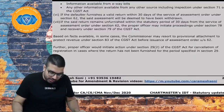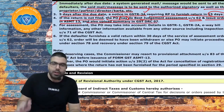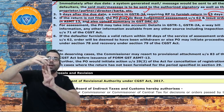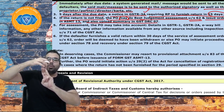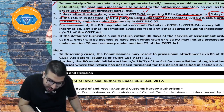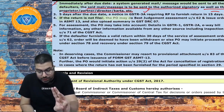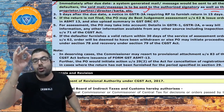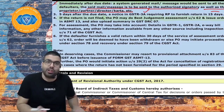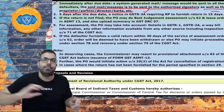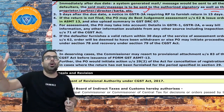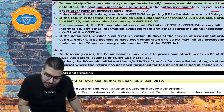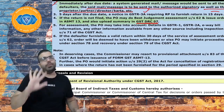Step 4: If the return is still not filed within 15 days of the notice, the proper officer may proceed to assess under section 62 — best judgment assessment of non-filers — and issue an order in ASMT-13. Along with that, the officer will upload a summary online in GST DRC-07 on the portal.